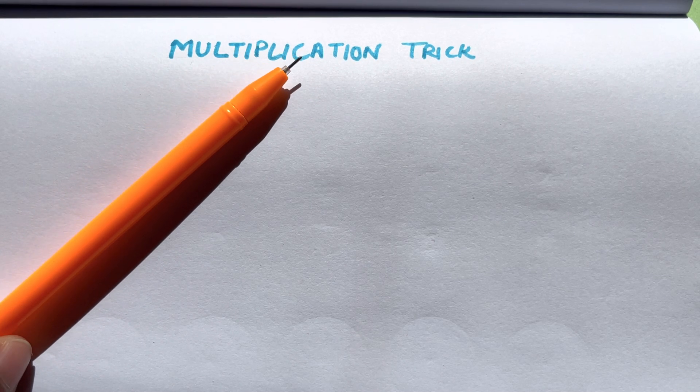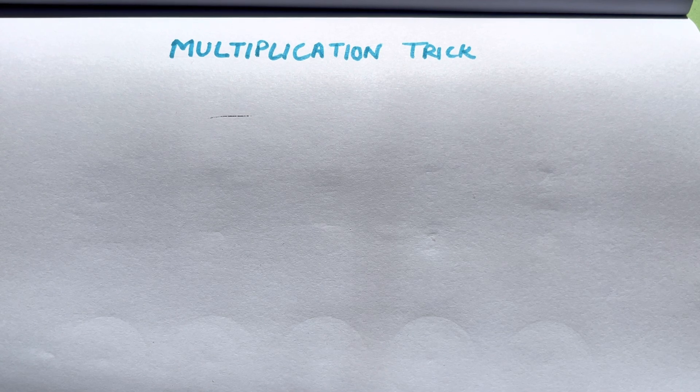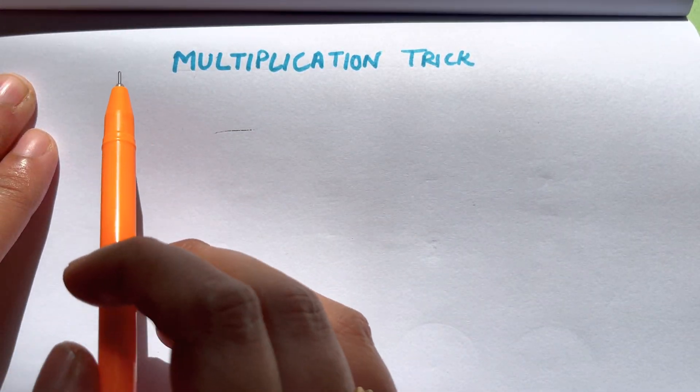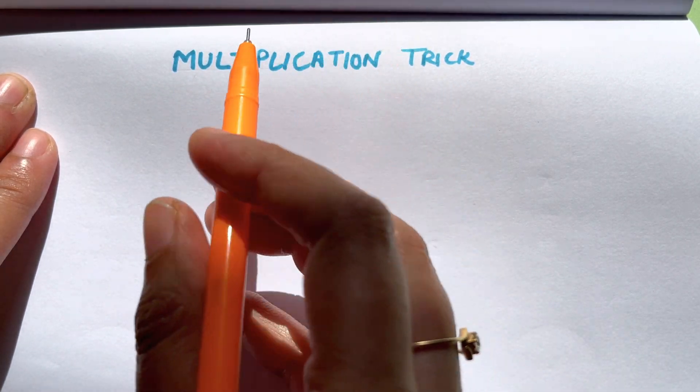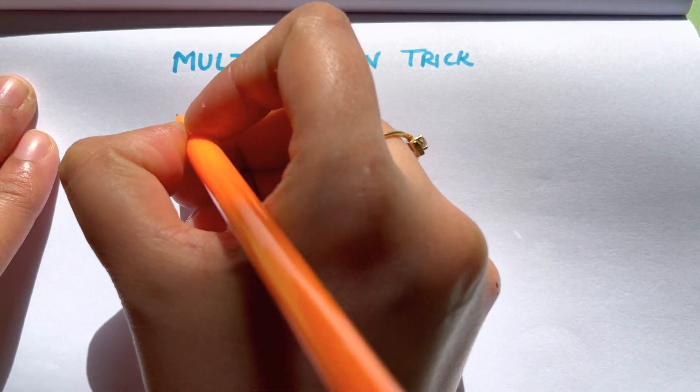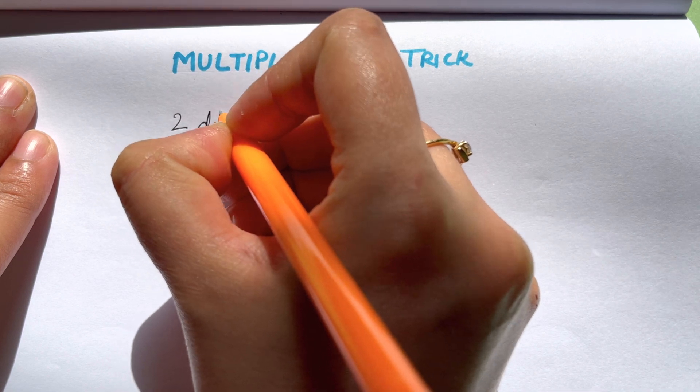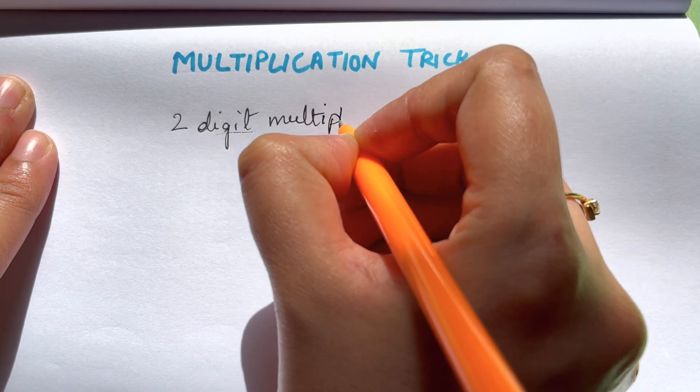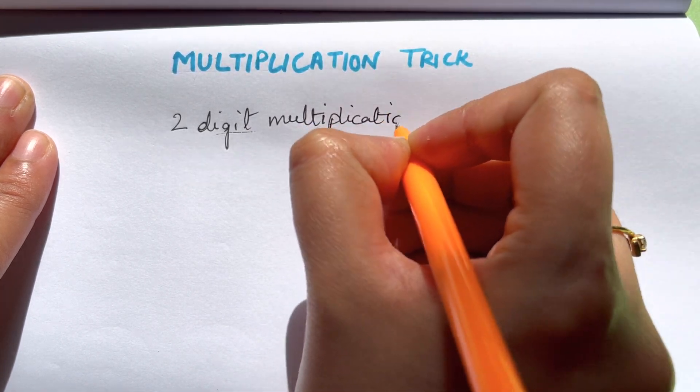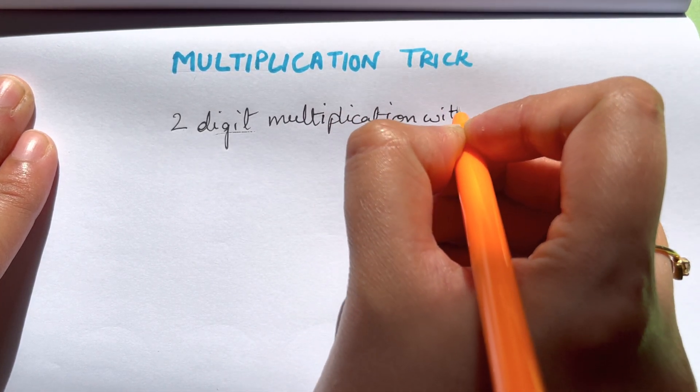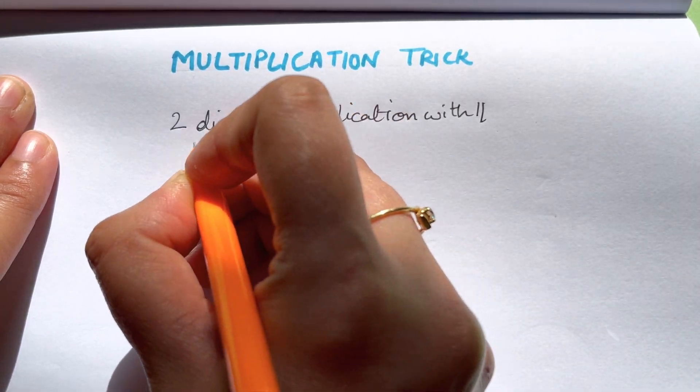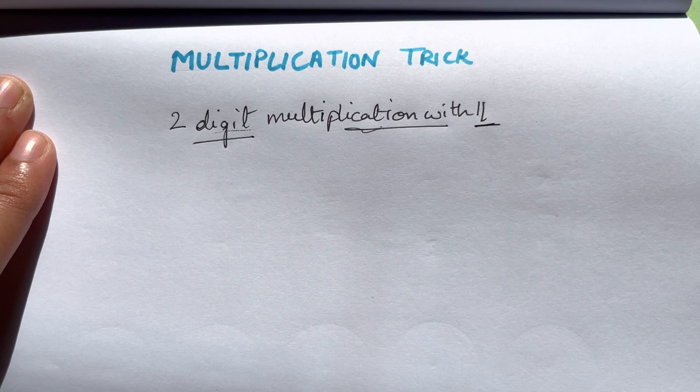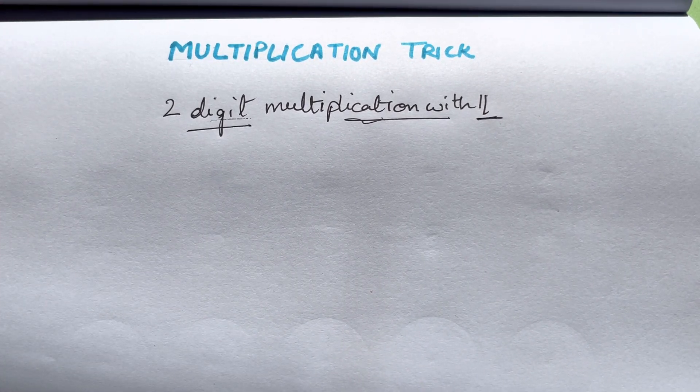So let us start with multiplication trick number one. The first multiplication trick is two digit multiplication with 11. I'm going to show you some tricks that go with 11.